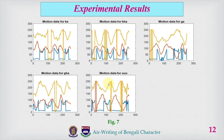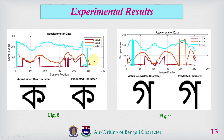For the experimental results, we collected air writing data for five Bengali characters — from 'Ko' to 'Umo.' These figures are the graphical representation of acceleration data for the air writing of these five Bengali characters.